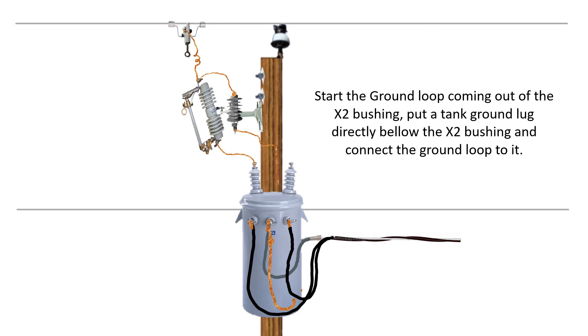All right, this is a basic diagram of how we're going to make our connections on a conventional two bushing transformer. When we're making these ground connections, the primary cutout would be open and the primary jumper would be dropped. I only put those up here to show what the finished product would look like.